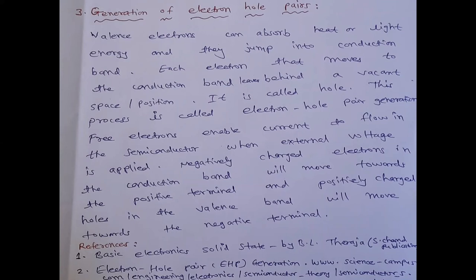Free electrons enable current to flow in semiconductor when external voltage is applied. Negatively charged electrons in conduction band will move towards positive terminals, and positively charged holes in the valence band will move towards negative terminals.